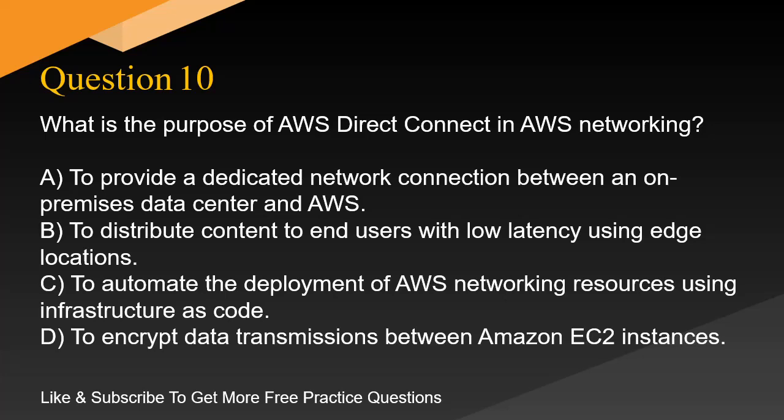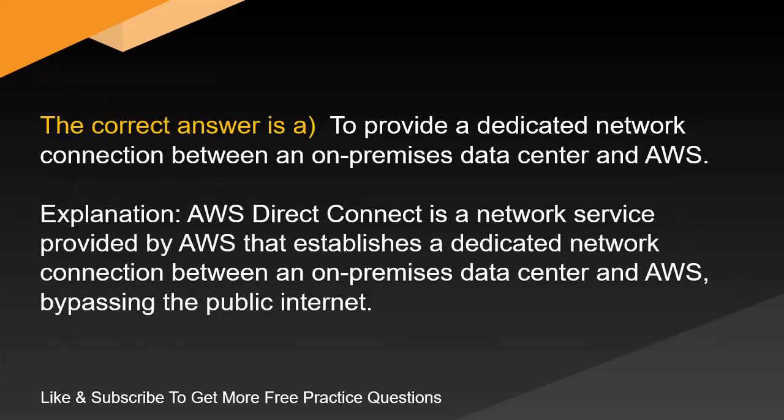Question 10. What is the purpose of AWS Direct Connect in AWS networking? A. To provide a dedicated network connection between an on-premises data center and AWS. B. To distribute content to end-users with low latency using edge locations. C. To automate the deployment of AWS networking resources using infrastructure as code. D. To encrypt data transmissions between Amazon EC2 instances. The correct answer is A: To provide a dedicated network connection between an on-premises data center and AWS.